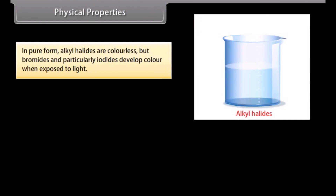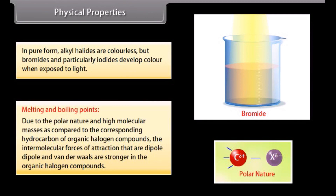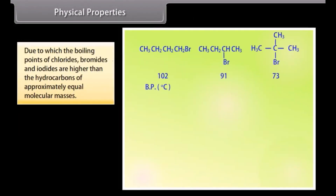Physical properties: In pure form, alkyl halides are colorless, but bromides and particularly iodides develop color when exposed to light. Melting and boiling points: Due to the polar nature and high molecular masses of these compounds, the intermolecular forces of attraction — dipole-dipole and van der Waals — are stronger, causing the boiling points of chlorides, bromides, and iodides to be higher than hydrocarbons of approximately equal molecular mass.